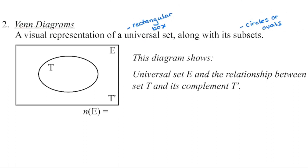We use a Venn diagram to visually represent the relationship between the subsets and the universal set. We use a rectangular box to represent the universal set and either circles or ovals to represent the subsets. In this diagram, E is my universal set, and the number of elements in E is written at the bottom. This is my subset T, and T' is my complement — every element that is part of the universal set but not contained in subset T goes into T'. We tend to put the complement in the bottom right corner, but sometimes you'll see it elsewhere.